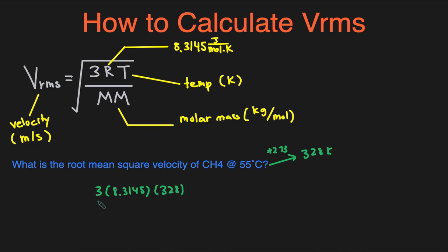328 divided by the molar mass of CH4. That is 16 grams per mole. We divide that by a thousand and we get 0.016, and then